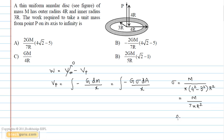In this question, the area element dA is given by 2 pi r dr. Substituting these values, we get Vp is equal to integral of minus g into M upon 7 pi R square into 2 pi r dr